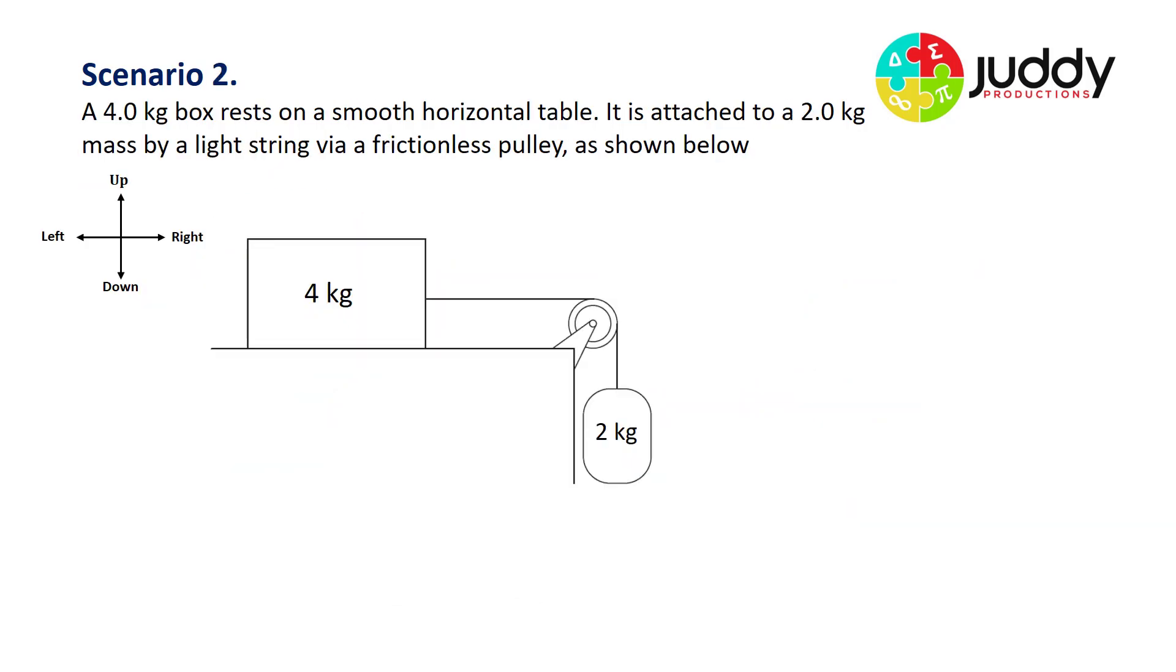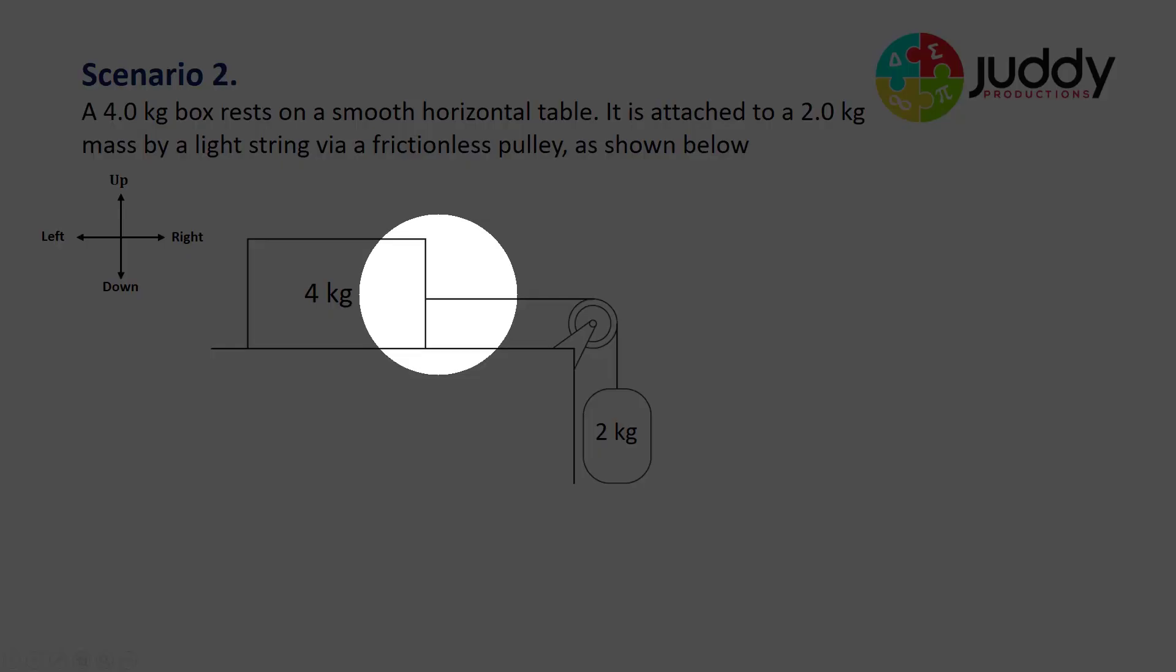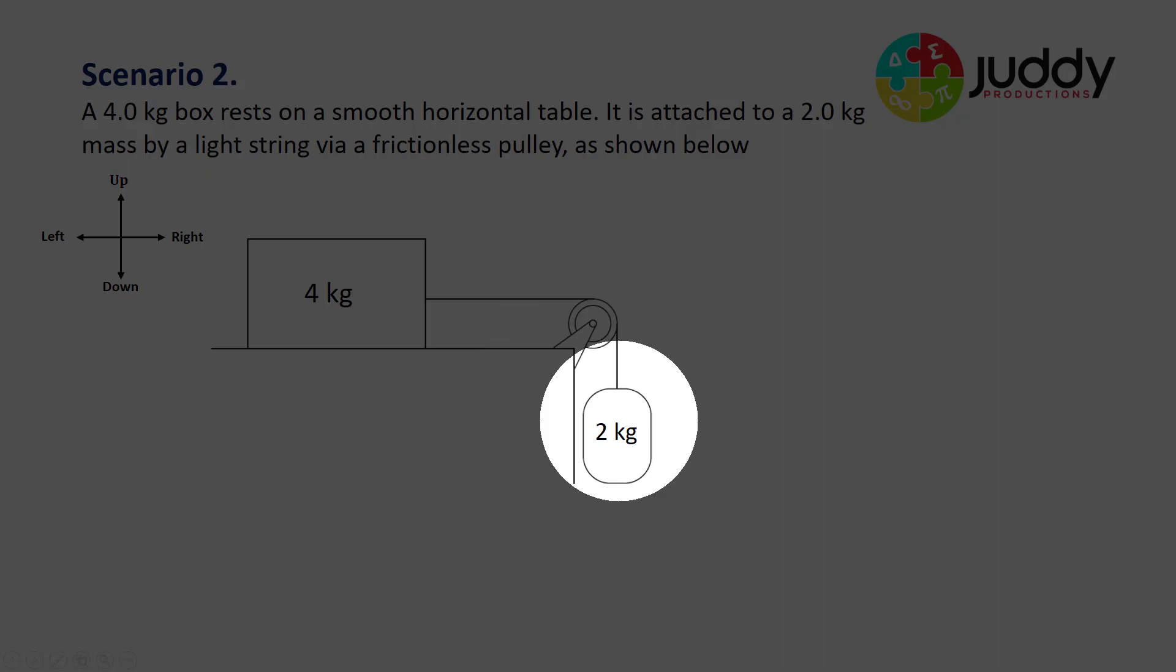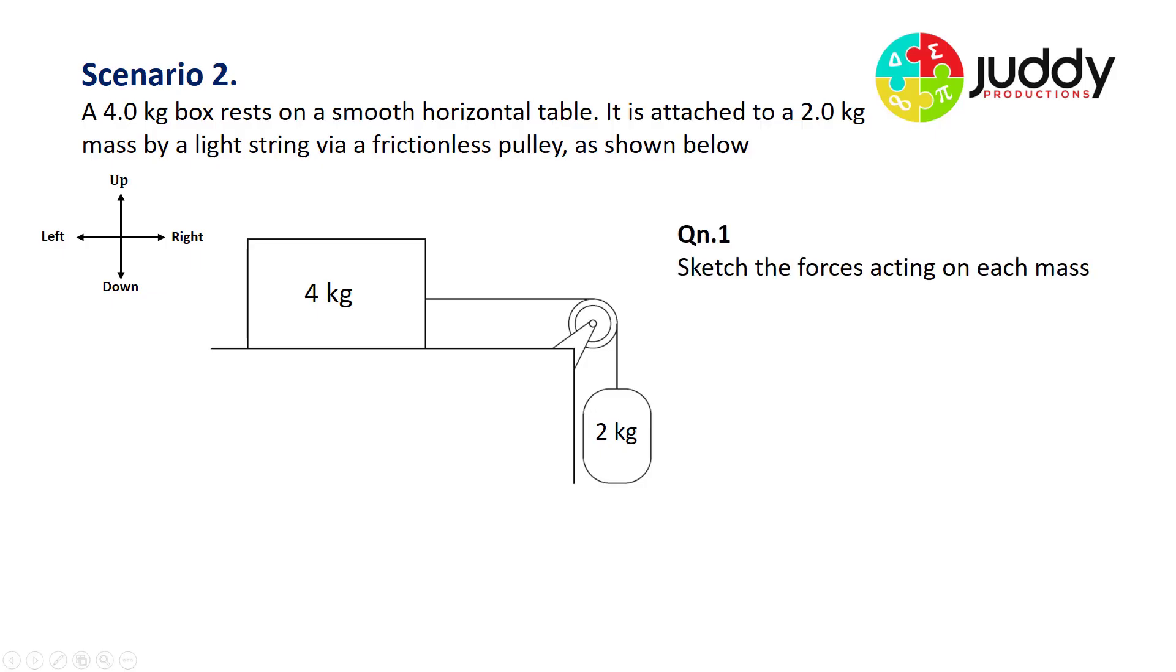Scenario two: we're looking at a four kilogram box resting on a smooth horizontal table as can be seen. It's attached to a two kilogram mass by a light string via a frictionless pulley. There's our two kilogram mass. Question number one: sketch the forces acting on each mass.